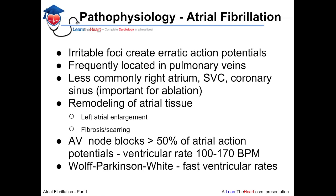In regards to the pathophysiology of atrial fibrillation, it usually arises from irritable foci causing multiple action potentials — between 400 and 600 beats per minute in the atrium. This is usually located in the pulmonary veins, which is very important in regards to how atrial fibrillation ablation is performed. Less commonly, the focus can be coming from the right atrium, the superior vena cava, or the coronary sinus. When a patient undergoes ablation for atrial fibrillation — also known as pulmonary vein isolation — not only are the pulmonary veins interrogated thoroughly, but the right atrium, superior vena cava, and coronary sinuses are as well, so the electrophysiologist does not isolate the pulmonary veins only to find the AF was arising from a different area.